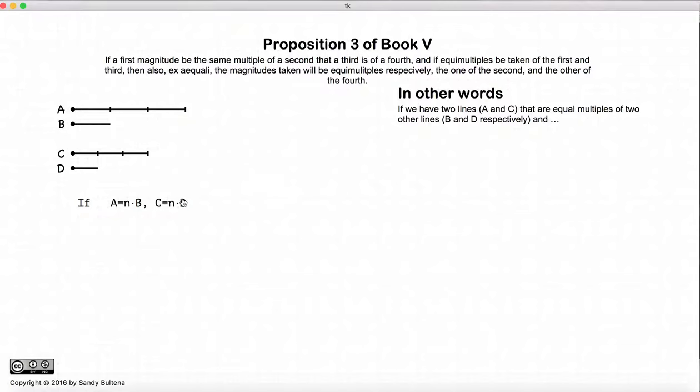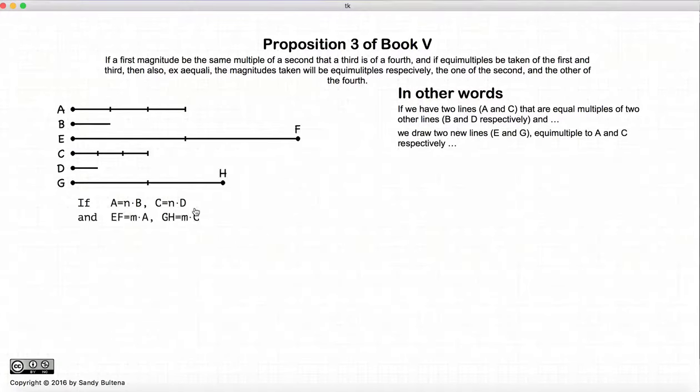In other words, this algebraic expression here. Now if we have another two lines, E and G, such that E and G are equal multiples of A and C. So in other words, we have this relationship here. Now if this holds true, then E and F and G and H are equal multiples of B and C.